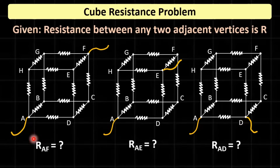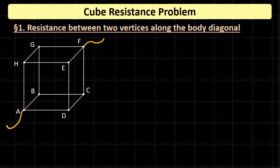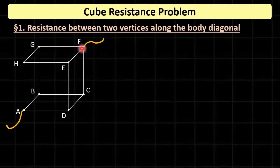Let's try to find the first category: the resistance between two vertices along a body diagonal. For the sake of clarity, I have not shown the resistors, and it is clear that the resistance between any two nearest vertices is R. So we send a current I that enters at vertex A and leaves from vertex F. The current I entering at A has three immediate paths to split into.